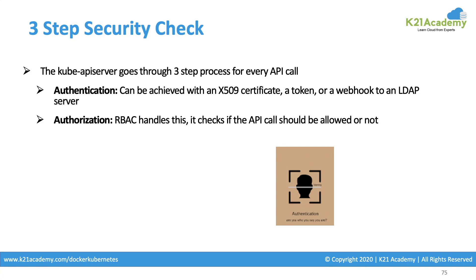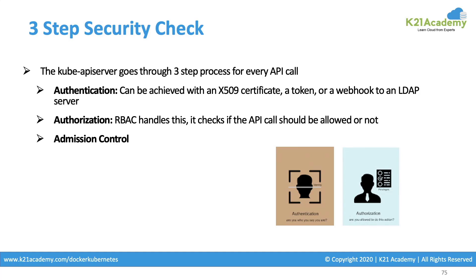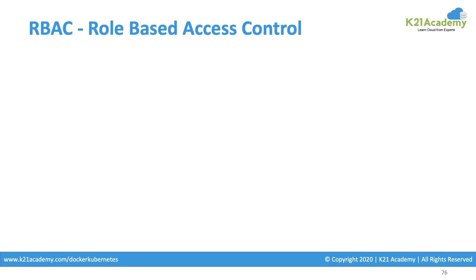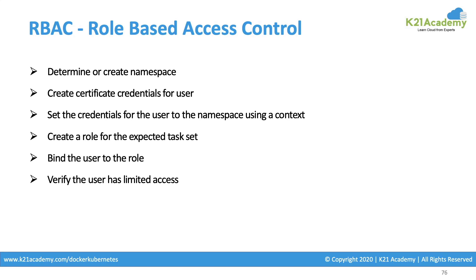Once the user is authenticated, it's designated as a valid user. Then it comes to the role-based access section, where Kubernetes handles whether a particular user is authorized to perform a set of actions or not. If I'm making an API call, I should be allowed or denied to make that call. A user may be authenticated to get into the cluster but may not be authorized to perform certain actions. Authentication is the first part, authorization is the second part, and once you are in the cluster, you have admission inside the cluster.